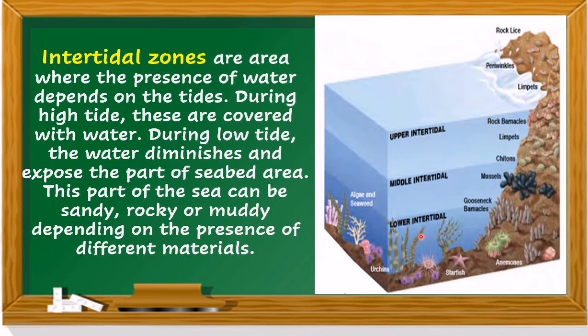These are the parts of the intertidal zones: the lower intertidal zone, the middle intertidal zone, and the upper intertidal zone. If it's low tide, the upper part will be exposed — you can see the periwinkles, limpets, and rock lines. The middle intertidal will also be exposed, showing rough barnacles, limpets, and chitons. And if lower still, you can see the seabed area.